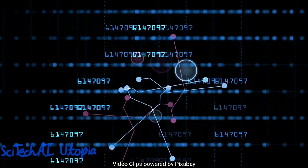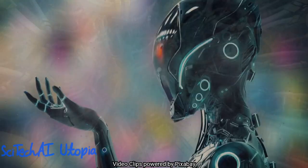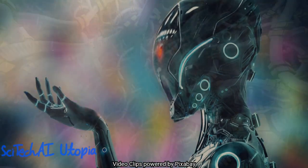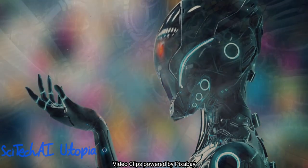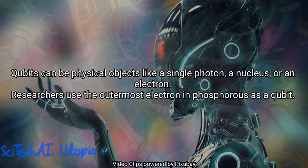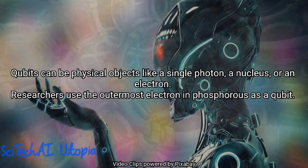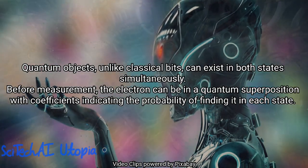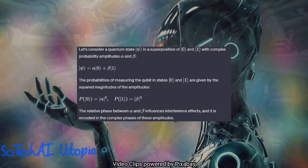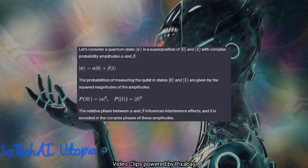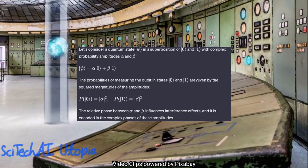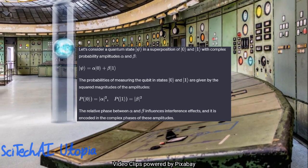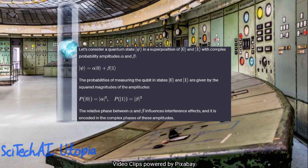In classical computing, information is processed using bits that exist in one of two states, 0 or 1. Quantum computing, on the other hand, relies on quantum bits or qubits, which can exist in a superposition of both 0 and 1 states simultaneously, thanks to the principles of quantum mechanics. A qubit can exist in a linear combination of states. The probabilities of measuring the qubit in state 0 or 1 are given by the squared magnitudes of the corresponding coefficients.